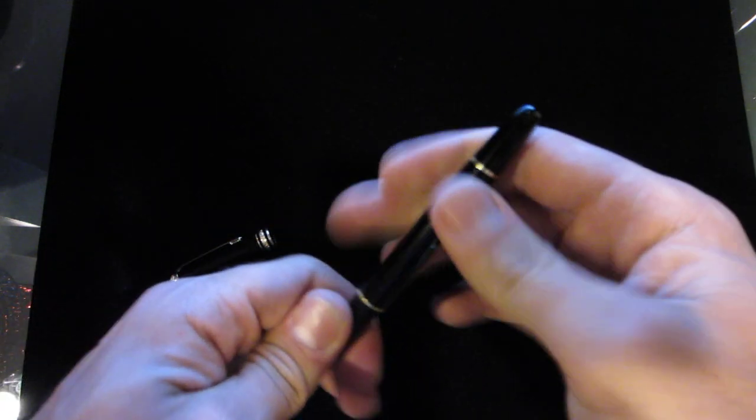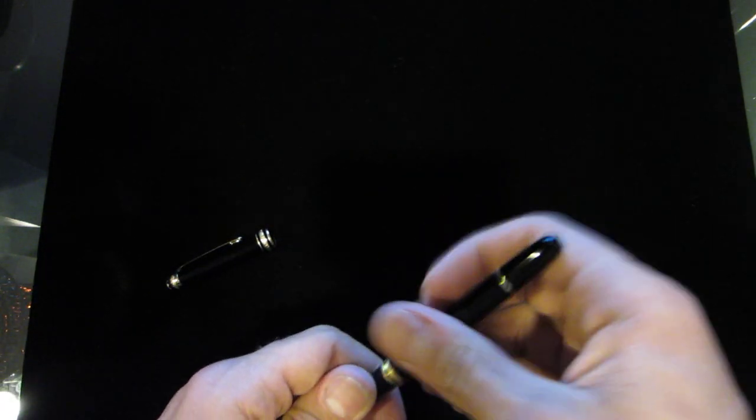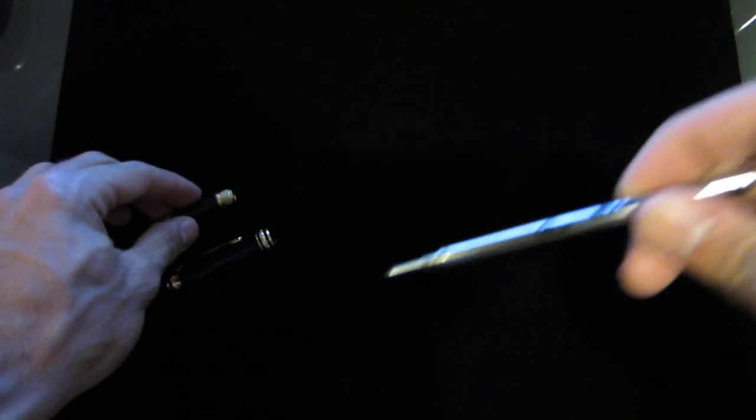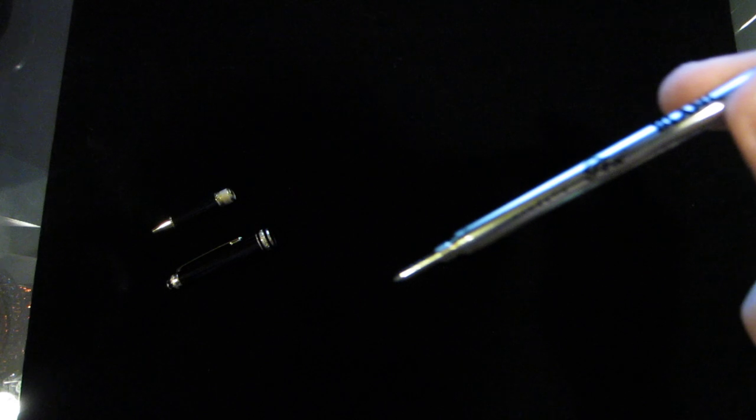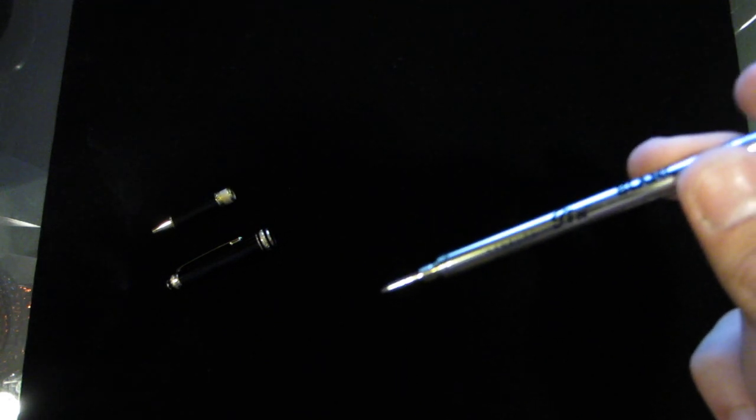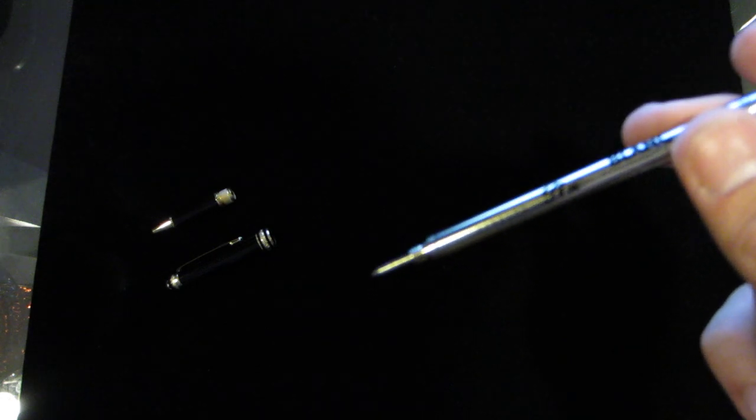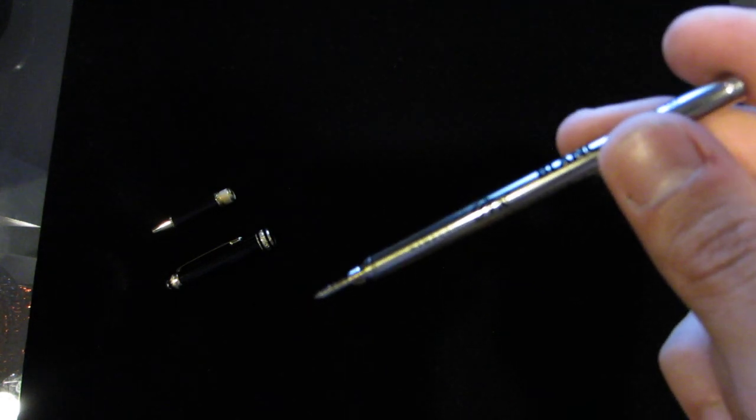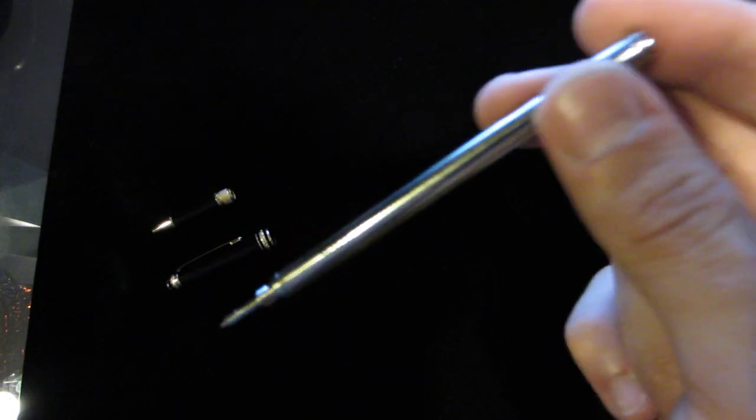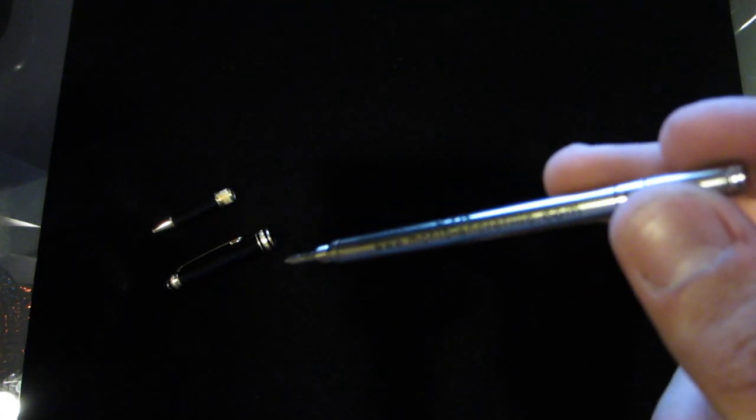For example, with this Montblanc pen, the refill, this guy right here, will last maybe like 20 pages of writing or something, maybe a little bit less depending on how you write. 20 smaller pages, moleskin pages or something of writing, but this will cost you about $7 plus tax if you go to Montblanc. So you can see how quickly these add up, especially if you do a lot of writing.